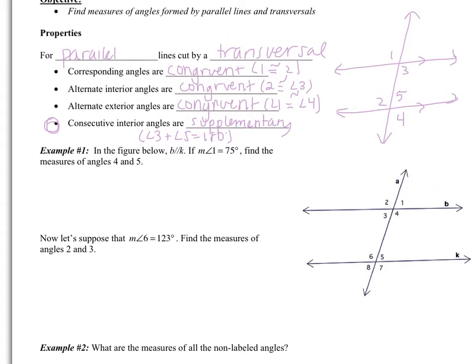Let's look at example 1. In the figure below, line B is parallel to line K — I'm going to mark that. Angle 1 is 75 degrees, and we need to find angles 4 and 5. Starting with angle 4: angles 1 and 4 form a linear pair, so angle 1 plus angle 4 equals 180. They're not corresponding or alternate interior — they're simply a linear pair. So 75 plus angle 4 equals 180, which gives angle 4 equals 105 degrees.